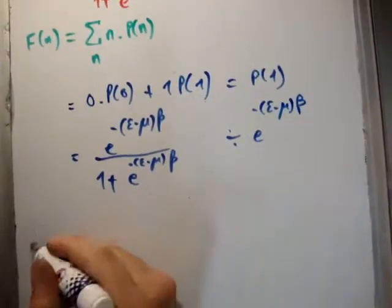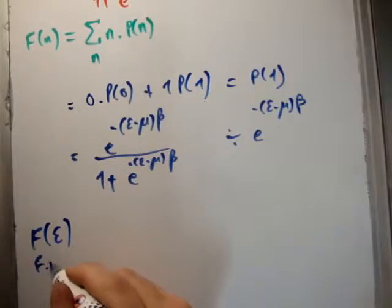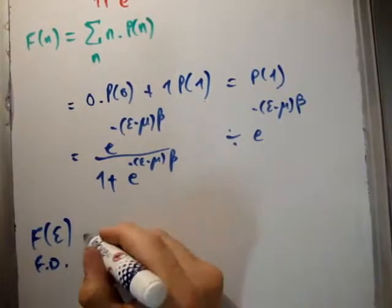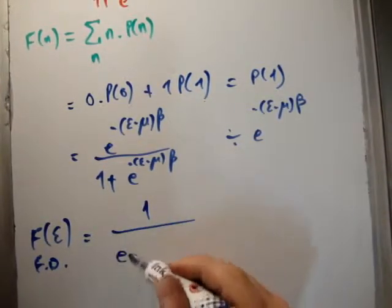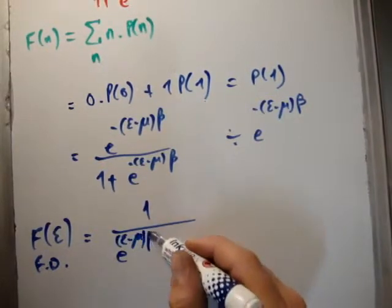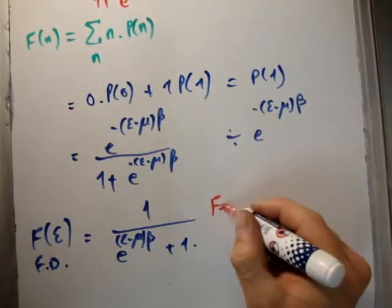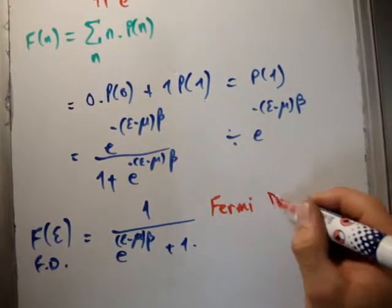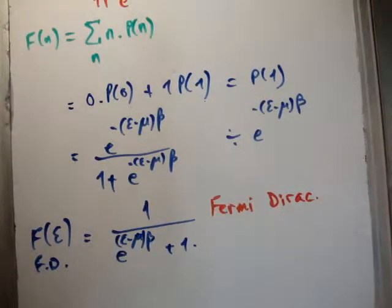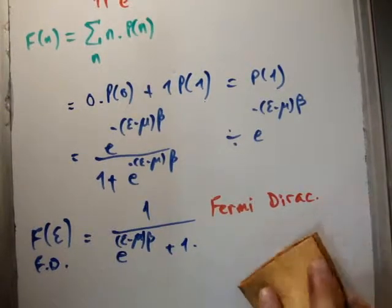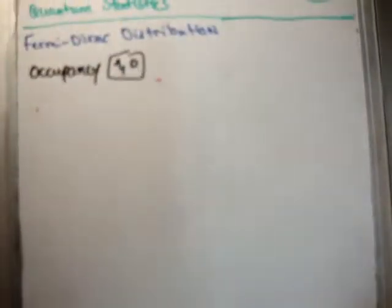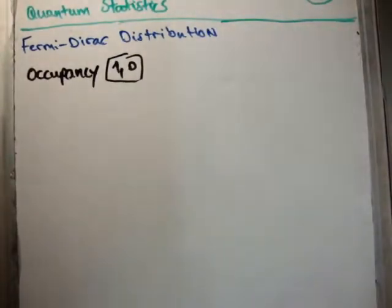we have that the Fermi-Dirac distribution, or occupancy function, equals 1 over e to the (ε - μ)β plus 1. It's used for fermions. Just a note on this to tie it in with what we've probably seen before.